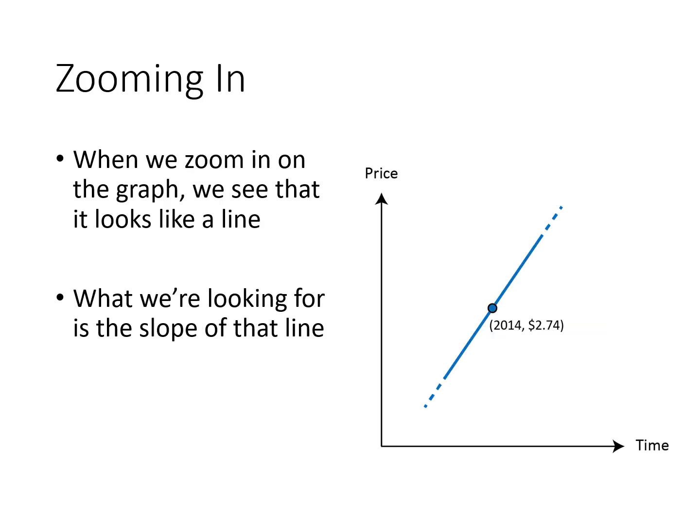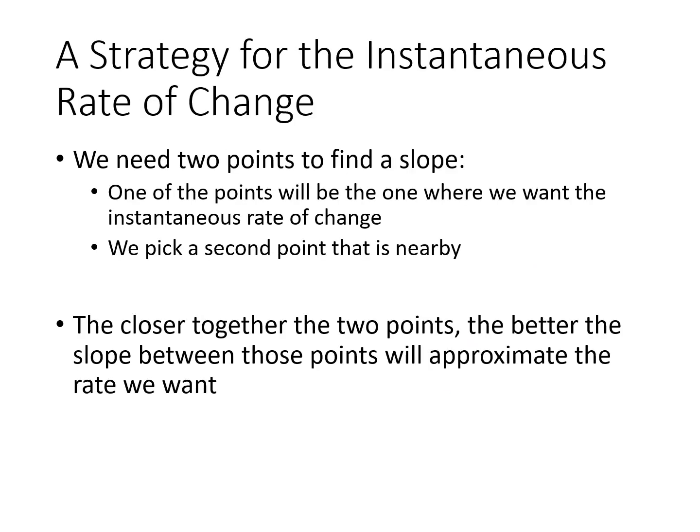What we can think about doing is zooming in on that point. If I zoom in on my graph at (2014, $2.74), if I zoom in far enough — and most functions have this property — it looks kind of like a line. So what we're essentially doing is looking for the slope of that line. But the same problem is still there: we still need two points to find a slope. So if we only have one point, how are we going to find the slope? The strategy we're going to use: we need two points. We only have one data point, but we really need two. So where are we going to get that second point from? The second point is just going to be some point that's nearby.